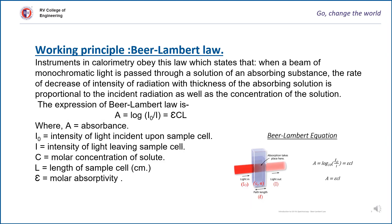The working principle is Beer-Lambert's law, which states that when a beam of monochromatic light is passed through a solution of an absorbing substance, the rate of decrease in intensity of radiation with thickness of the absorbing solution is proportional to incident radiation as well as the concentration of the solution. In other words, absorbance is directly proportional to optical path length and concentration of the colored solution. The expression is A = εCL, where A is absorbance, I₀ is intensity of light incident upon the sample cell, I is the intensity of light leaving the sample cell, C is molar concentration of the solute, L is the length of the sample cell, and ε is molar absorptivity.